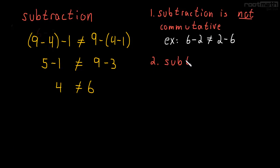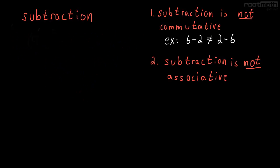So subtraction is not associative. And there's another reason subtraction is not that great. But first let's just write our example down. So our example here was 9 minus 4 parentheses minus 1 is not equal to 9 minus parentheses 4 minus 1.